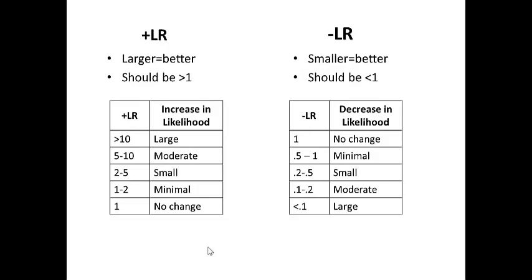There are a lot of different guidelines for interpretation, and here are some rough rules of thumb. For the positive likelihood ratio, it should be greater than 1 — otherwise it's a very poor test — and larger is better, so it should be as far from 1 as possible. For the negative likelihood ratio, smaller is better and you want it as close to 0 as possible. The tables on screen include rough guidelines for interpreting the magnitude of each likelihood ratio.